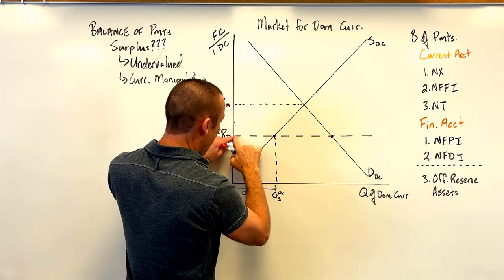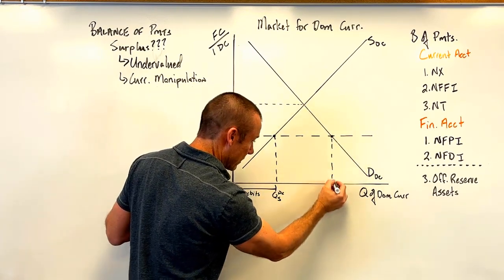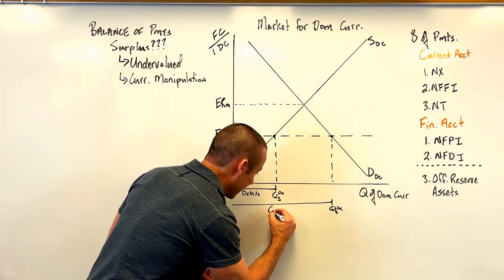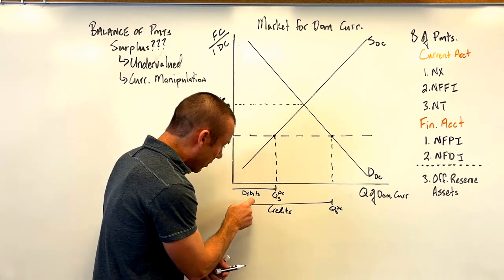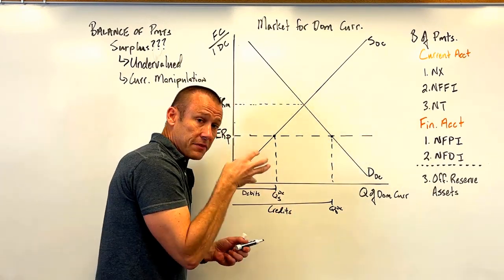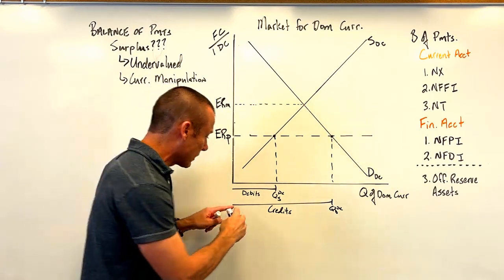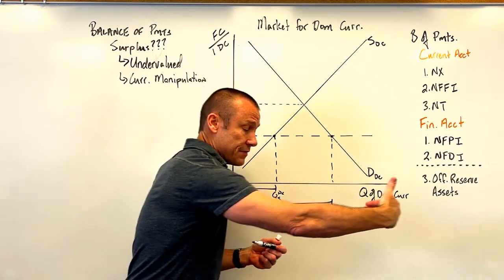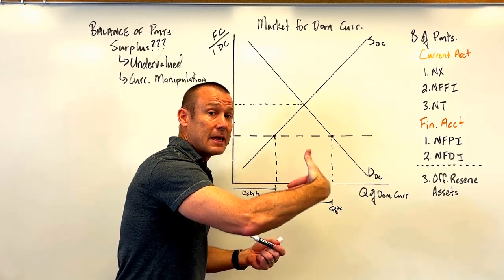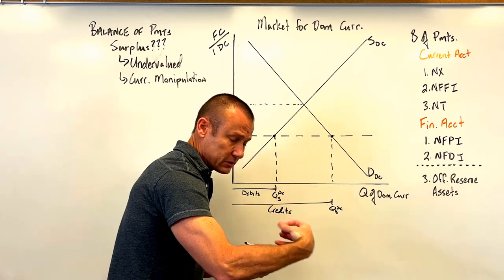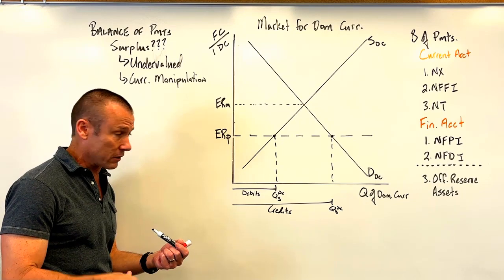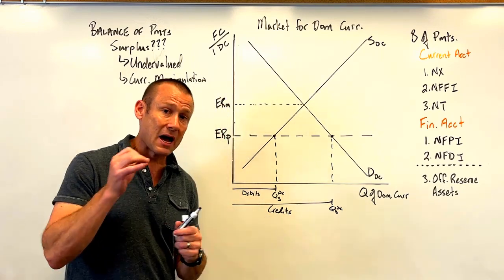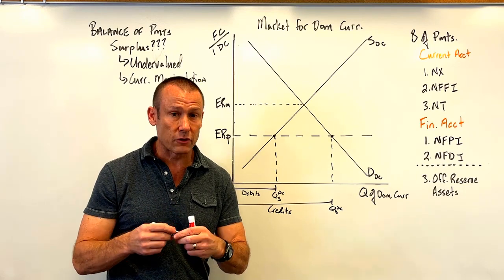At that pegged exchange rate, the quantity demanded of domestic currency represents credits. We're integrating the language of the balance of payments — credits and debits — with the exchange market, which is so important for deep understanding. The people demanding the domestic currency have foreign currency; they're supplying that foreign currency and demanding the domestic currency because they want to come into this country's product market or financial market. And the issue is: there are more of those — credits are bigger than debits — which is the balance of payments surplus.